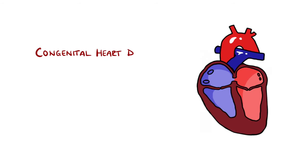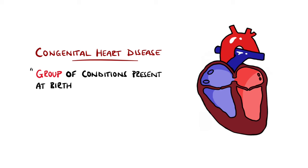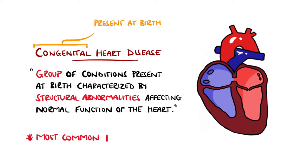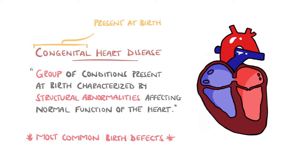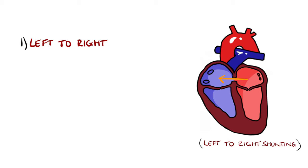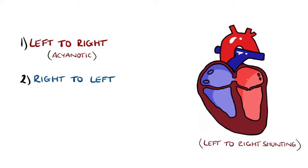Congenital heart disease is a group of conditions present at birth characterized by structural abnormalities disturbing normal function of the heart, and is the most common form of birth defects. To make them easier to remember, they can be divided into three main types: those causing blood movement from the left to the right side of the heart — left to right shunting, also termed acyanotic — and those causing right to left shunting, called cyanotic, because deoxygenated blood moves to the left causing high amounts of deoxygenated hemoglobin in the arterial blood.